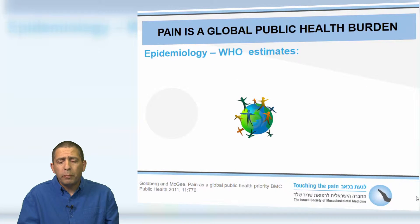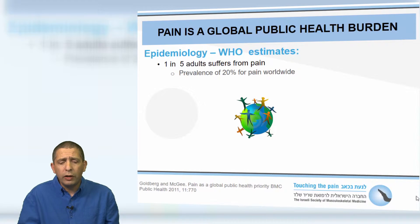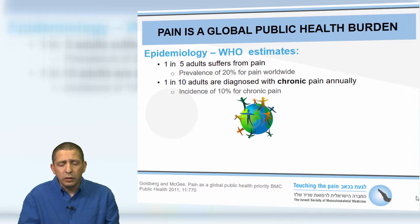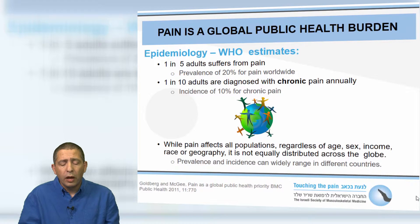Pain is a global public health burden. The WHO estimates that one in five adults suffers from pain — a prevalence of 20% worldwide — and one in ten adults are diagnosed with chronic pain annually, an incidence of 10%. Pain affects all populations regardless of age, sex, income, race or geography.